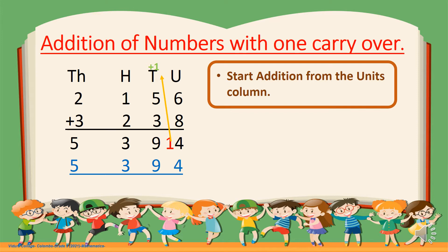What does it mean with 1 carryover? Let's start addition from the unit column. 8 plus 6 is 14. 14 is a 2-digit number — you have 1 and 4, 2 digits. 1 carryover means when you have a 2-digit number, you keep the unit column digit in the unit place, while the tens column digit you take it over to the tens place, because units you can keep under the unit column — that is its own place value. But tens you have to take to the tens column.